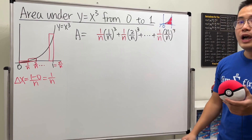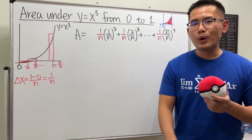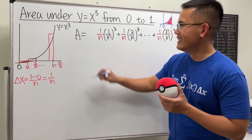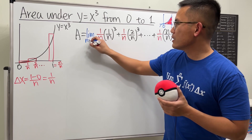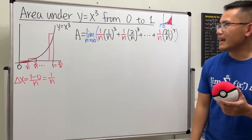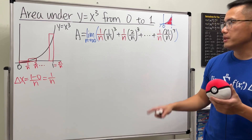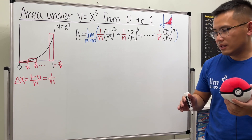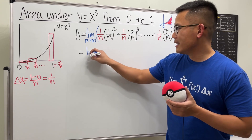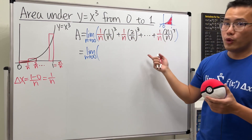To get the exact area, we can't use just 10 or 100 rectangles — we need infinity. Even 1 billion isn't enough. When we talk about infinity, we take the limit as n goes to infinity. So we take the limit as n→∞ of the sum expression. This is what will help us find the area.